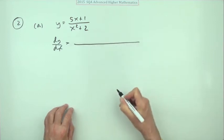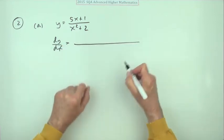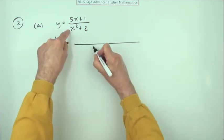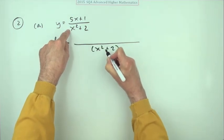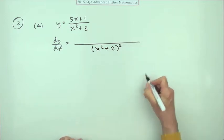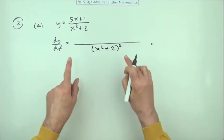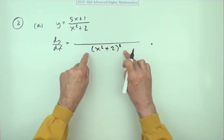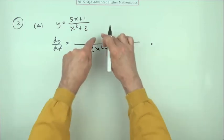So what have we got? Quotient rule. So I've got a quotient, square the denominator, and in fact as soon as you do that, as soon as you draw that line with that squared underneath, that's the first mark - knowing to use the quotient rule and getting the correct denominator.